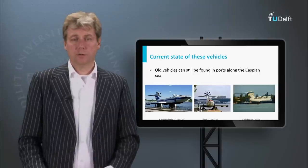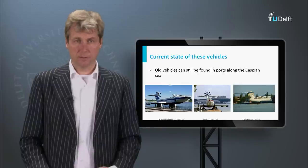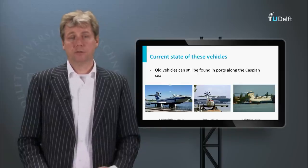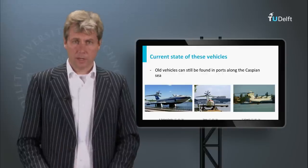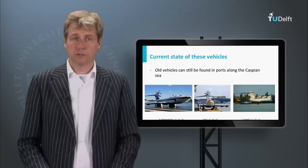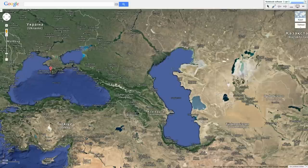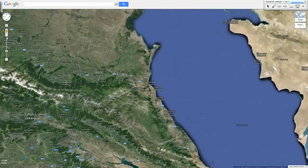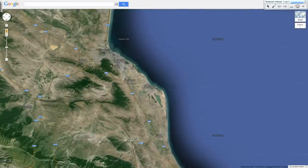These vehicles are no longer active — most of them were experimental and never made it into large numbers or operational status. They are still present; you can still see them along the borders of the Caspian Sea. Though we cannot go there right now, there is another way to show them using Google Maps. Here we see Google Maps, with the Black Sea on the left and the Caspian Sea on the right. There are only a few ports on the western side of the Caspian Sea, so if we zoom in to some of them, here for instance we can see the Caspian Sea.